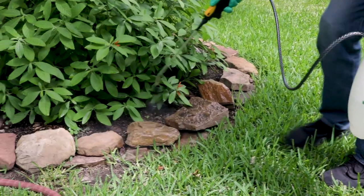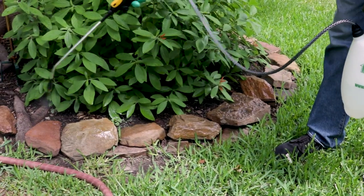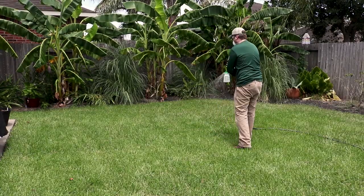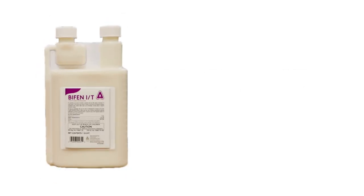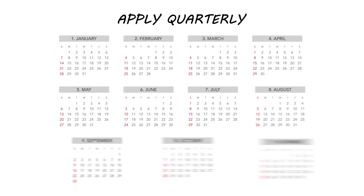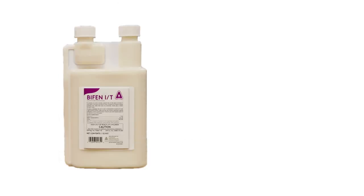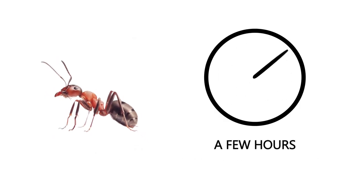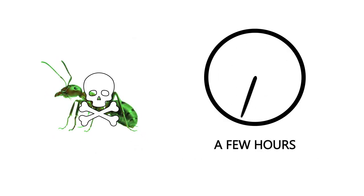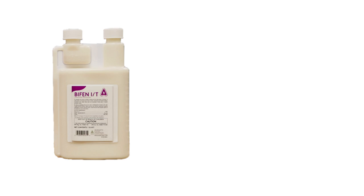Apply Bifent during calm days where rain is not in the immediate forecast, and keep all pets and people off the treated areas until they're dry. Bifent IT has a residual of up to 90 days, and we typically recommend spraying quarterly for preventative control. Bifent IT is not an instant kill — once the insect comes into contact with the chemical, it can take a few hours for it to die. Depending on your targeted pest life cycle, you may need to reapply in 14 to 21 days.